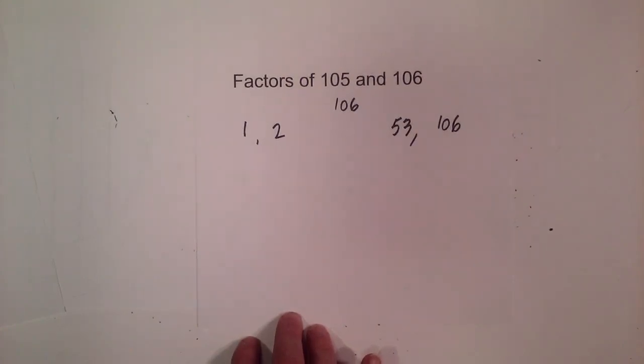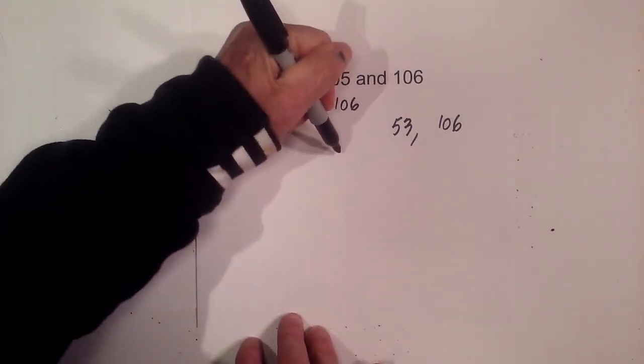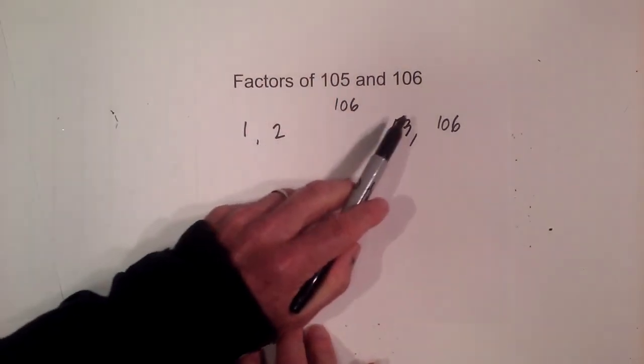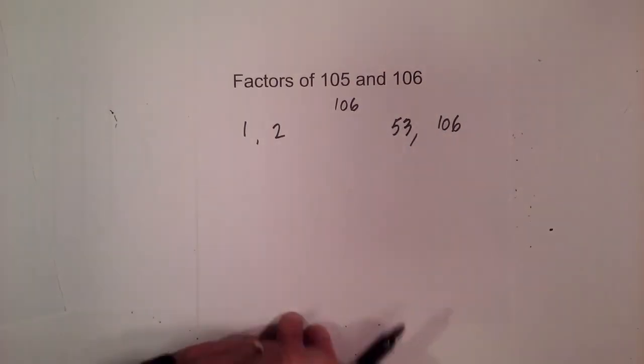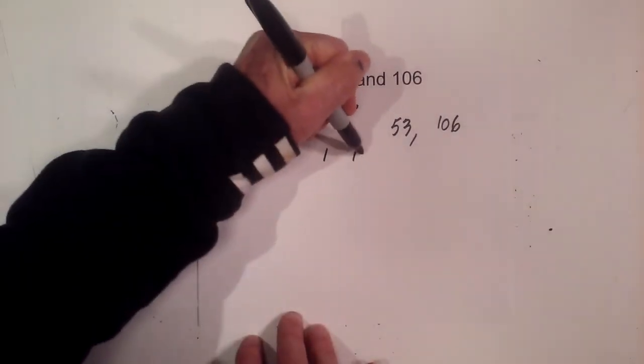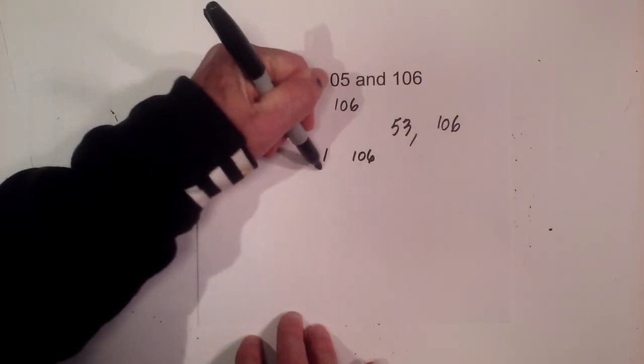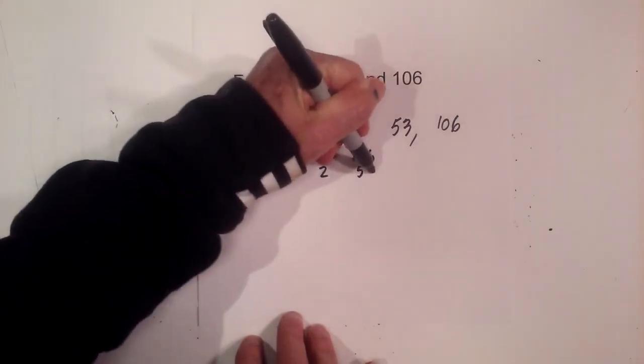And then after that, 3, 4, 5, 6, 7, 8, that's the rest of the numbers, so the factors of 106 are 1, 2, 53, 106. If you need to see these in pairs, it's 1 times 106, 2 times 53.